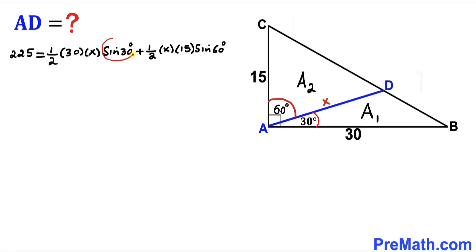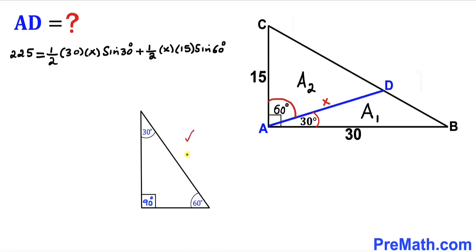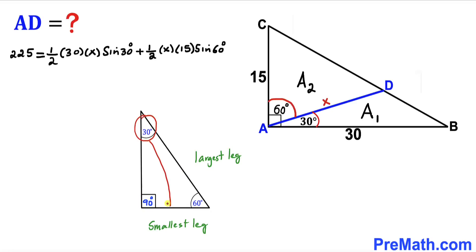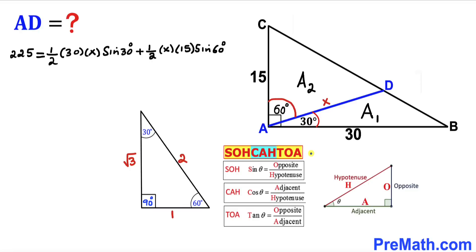Let me show you how to find sine of 30 degrees and sine of 60 degrees without a calculator using the 30-60-90 special right triangle. The side opposite 30 degrees is the smallest leg; if that equals 1, then the hypotenuse opposite the 90-degree angle is 2. Using the Pythagorean theorem, the remaining leg opposite 60 degrees is the square root of 3.